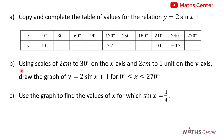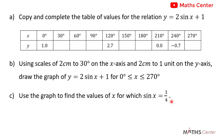The second part says that we should use a scale of 2 centimeters to 30 degrees on the x axis and 2 centimeters to 1 unit on the y axis to draw the graph of the relation y is equal to 2 sin x plus 1, for the interval x between 0 degrees and 270 degrees. Then we will use the graph to find the value of x for which sin x is equal to 1 divided by 4.